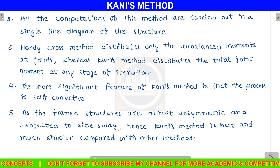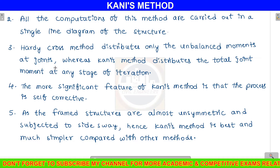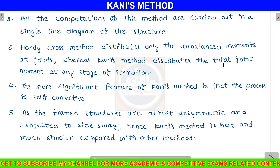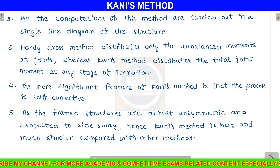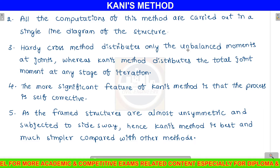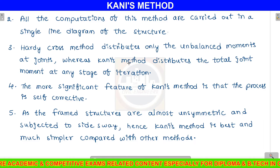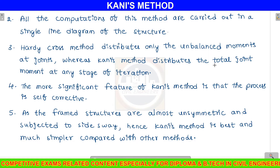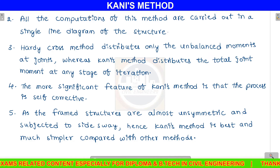The Hardy-Cross method distributes only the unbalanced moments at the joints, whereas Kani's method distributes the total joint moment at any stage of iteration.